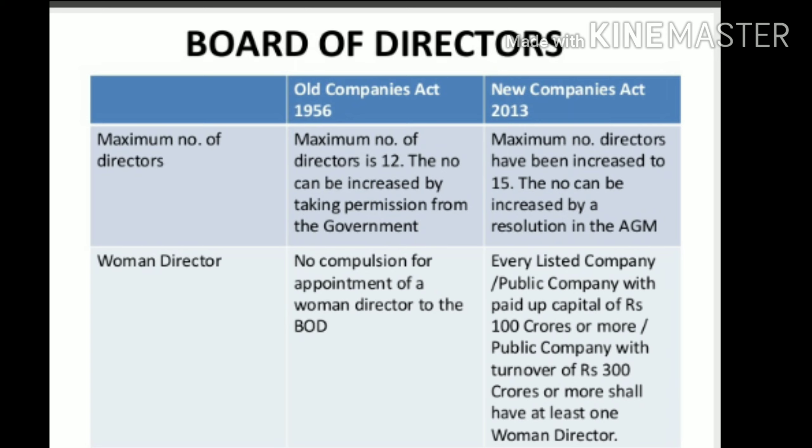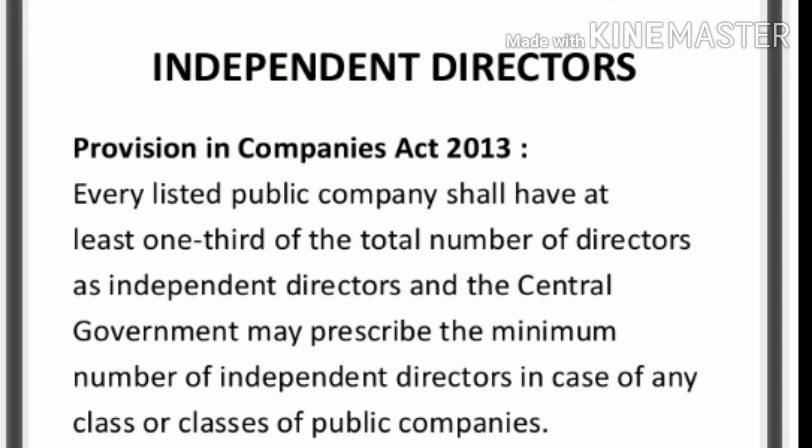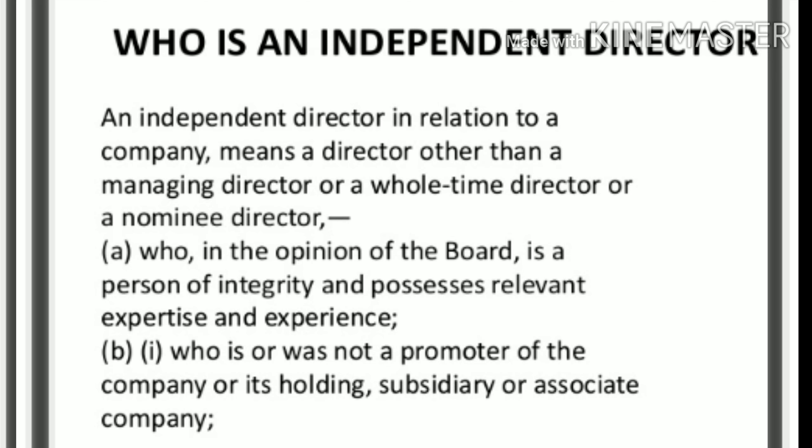The Companies Act 2013 also defines the Independent Director. Every listed public company shall have at least one-third of the total number of directors as independent directors. The central government may prescribe the minimum number of independent directors for certain classes of public companies.